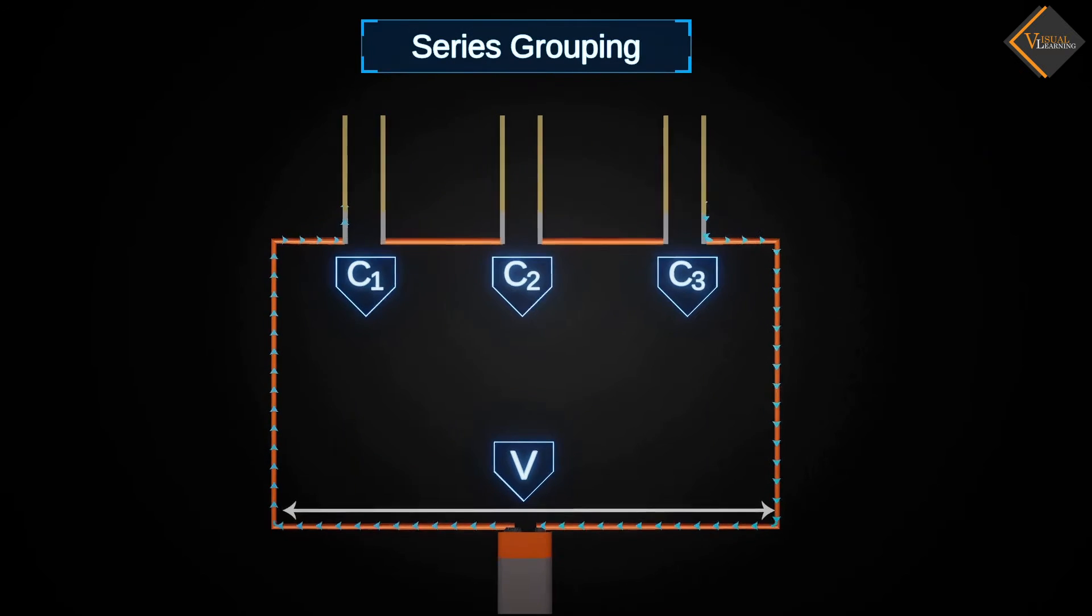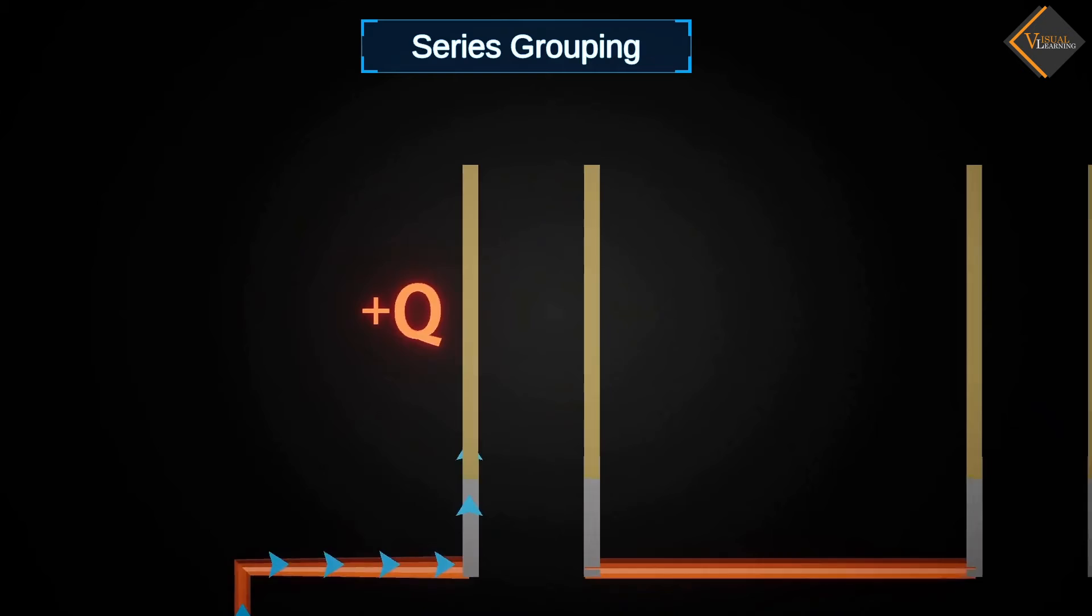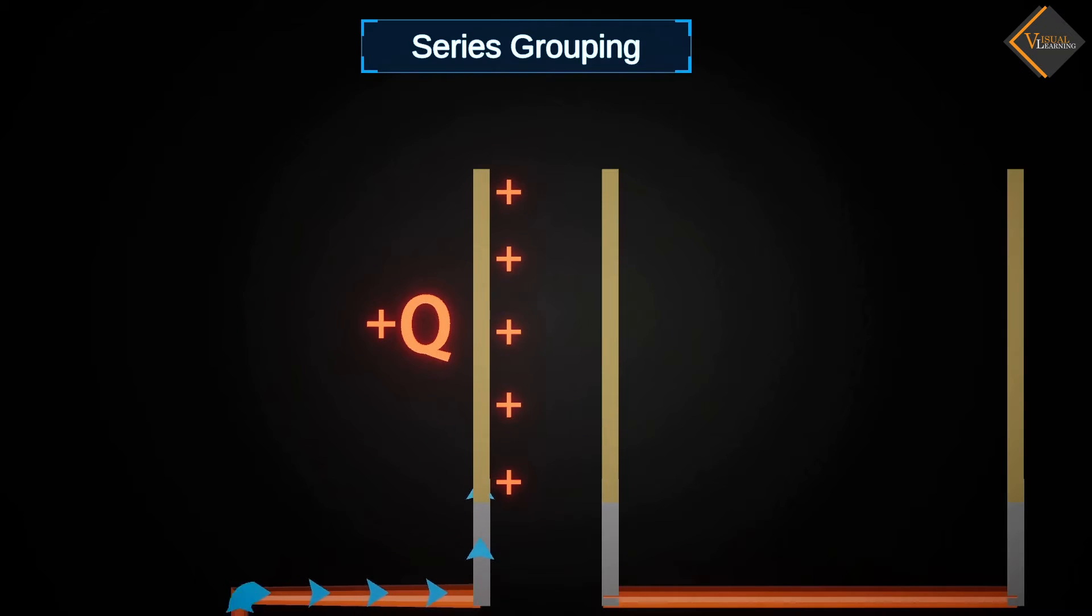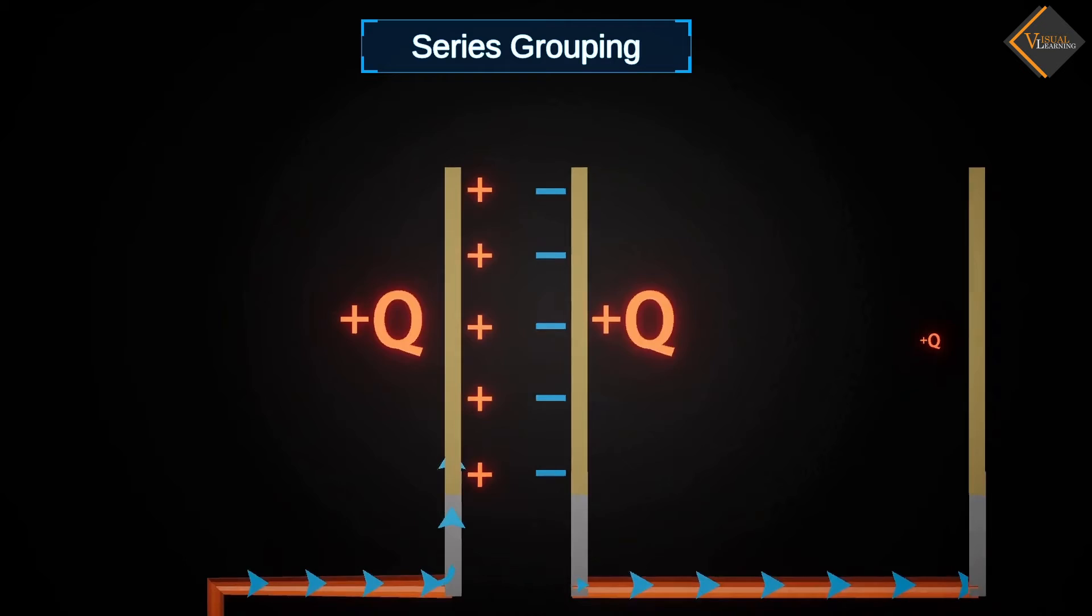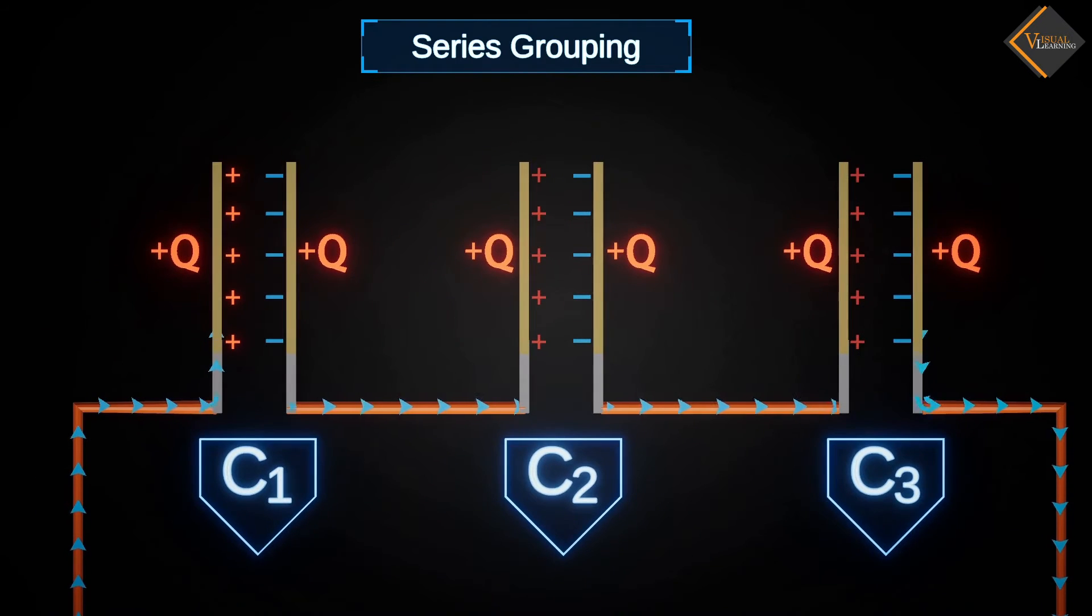When the circuit is complete, charge Q transfers to the left plate of C1 creating a positive charge on its inner side due to induction. Simultaneously, a negative charge is created on the right plate due to induction, and positive charge is created on the outer side. While the plus Q charge flows onto the left plate of C2, positive and negative charges are created again on both plates of C2 and the same process repeats for all capacitors.